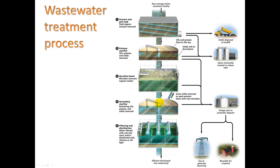Most places then send it to a secondary clarifier, repeating the settling process on water that's already been purified to capture whatever remains. Then it goes into a filtering and disinfection tank where it's filtered with coal, activated charcoal, or sand — similar to a Brita water filter. It's also chlorinated, not so you can drink it, but to ensure it's free of pathogens before being released to the ocean or rivers.